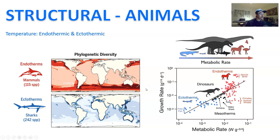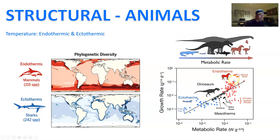There's a very strong correlation between metabolic rate and growth rate between endotherms and ectotherms. In general, endotherms will have a high metabolism and a high growth rate compared to ectotherms, with a few exceptions. And then you've got your dinosaurs that are kind of in the middle between the two.